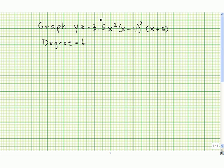The leading coefficient is negative 3.5. And now we should mark down what the zeros are. This x squared here tells us that 0 is one of the zeros. 4 is one of the zeros. And negative 3 is one of the zeros.